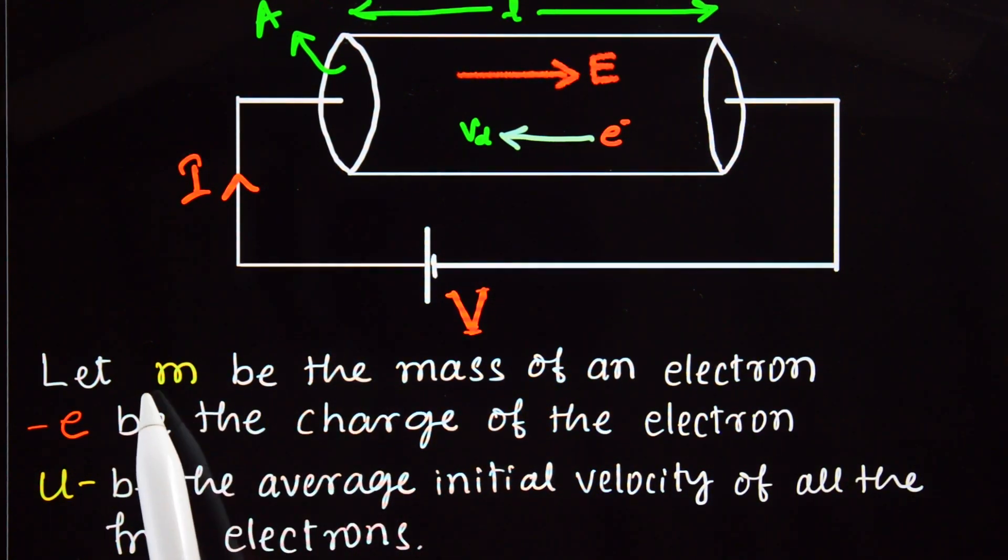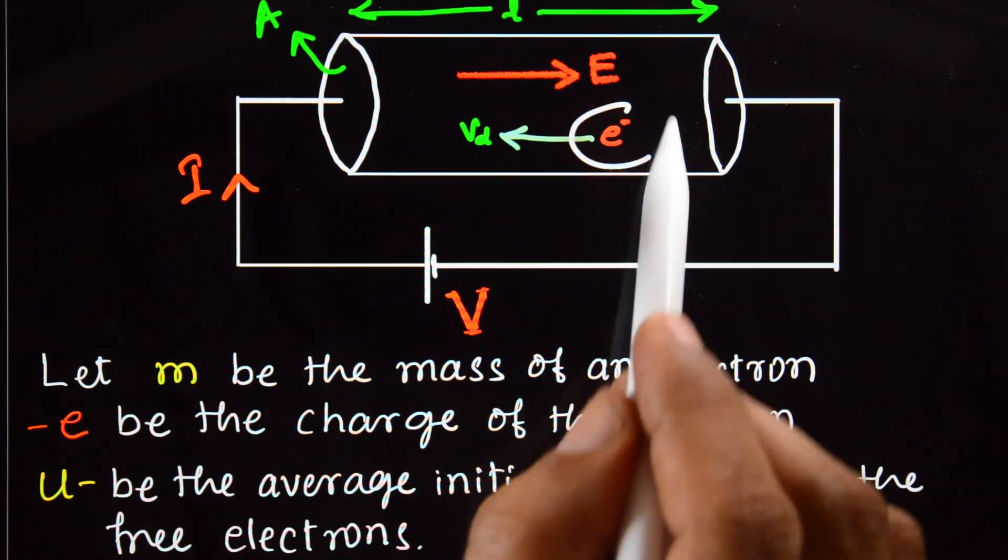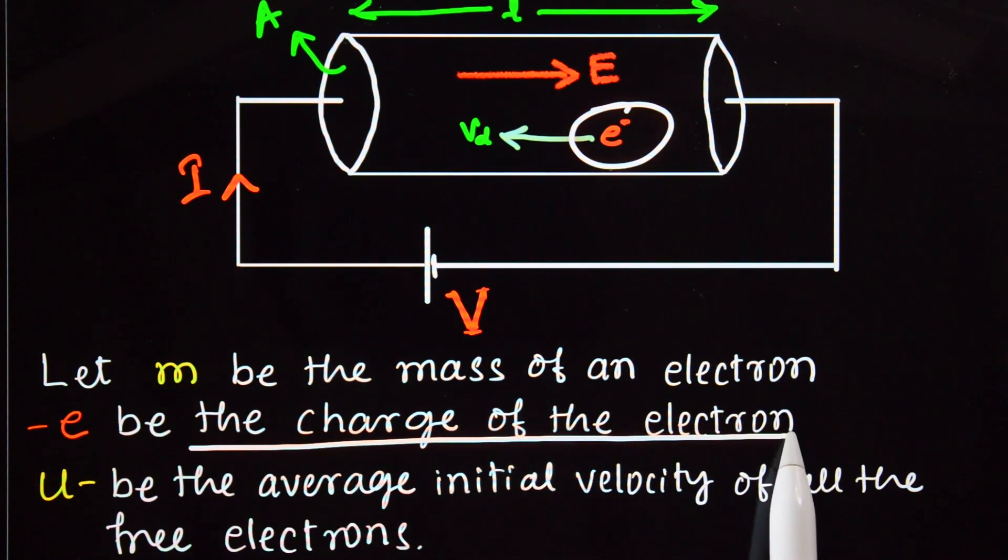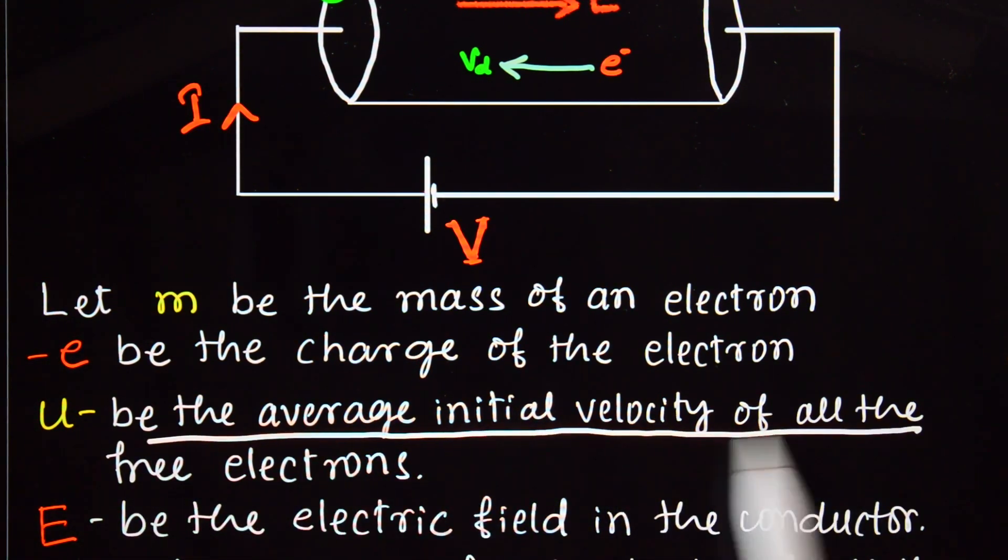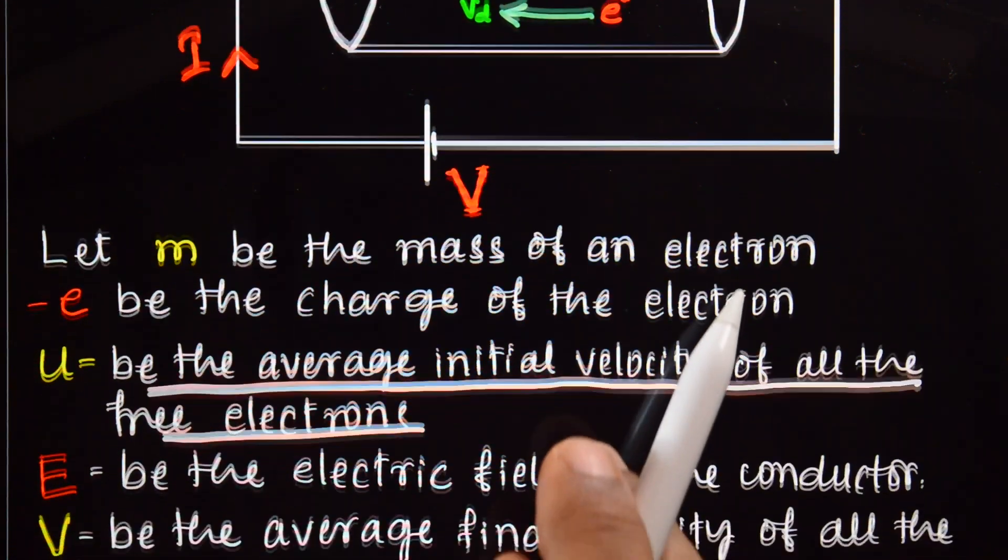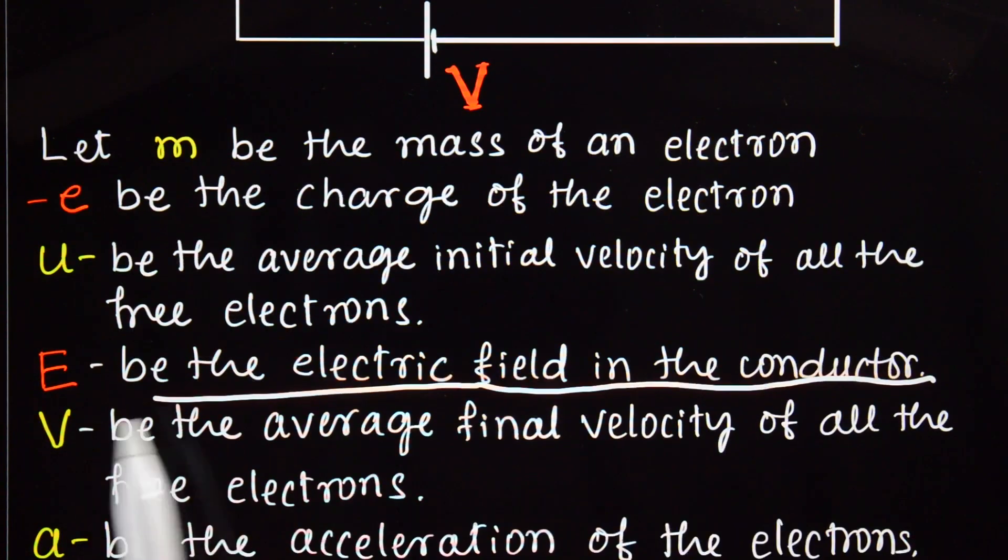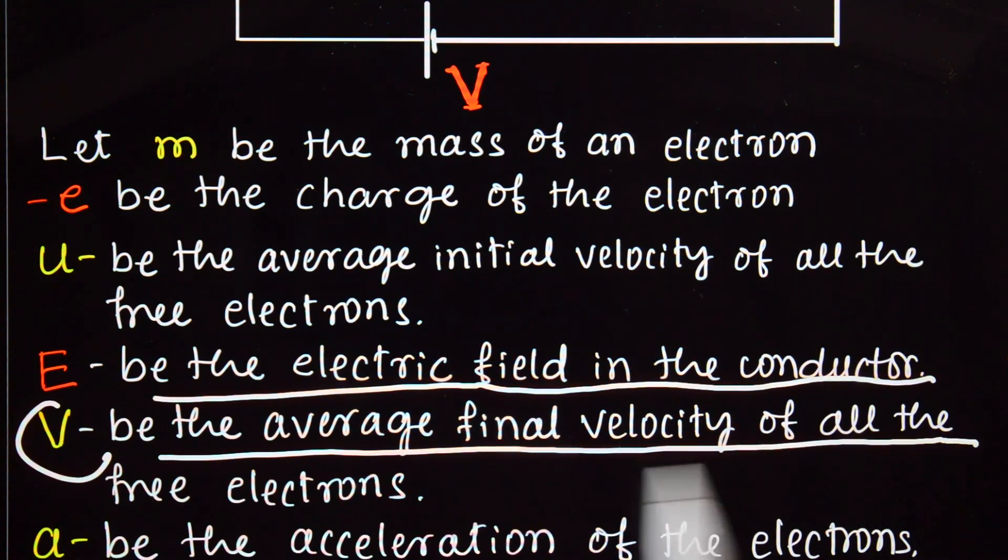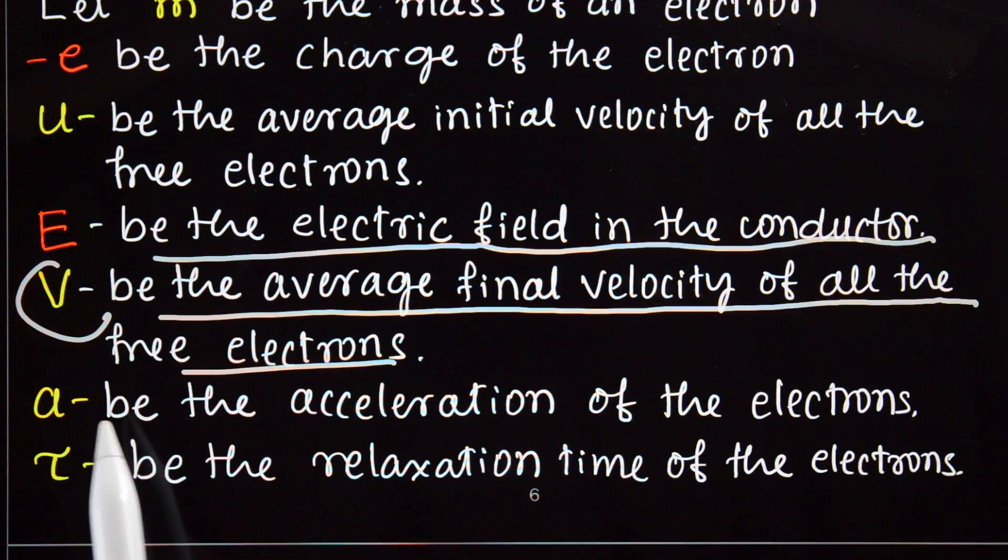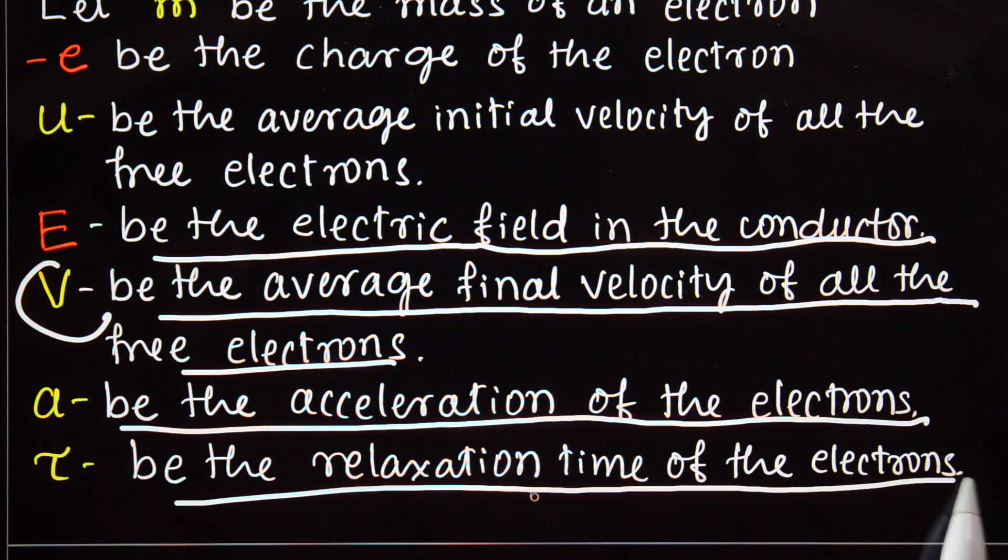Let m be the mass of electron, minus e be the charge of the electron, u be the average initial velocity of all free electrons, E be the electric field in the conductor, v be the average final velocity of all free electrons, and a be the acceleration of electrons.